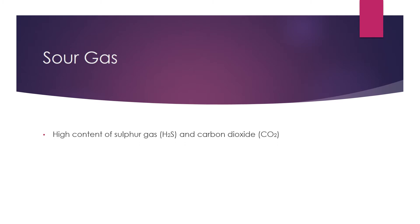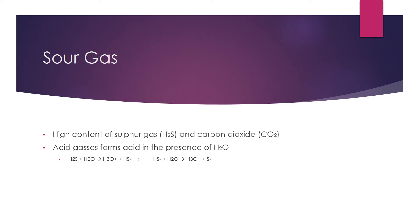Sour gas contains high levels of H2S and CO2. These acid gases form acid in the presence of water. When H2S reacts with water, we obtain H3O ion and HS ion, then HS ion will continue to react with water, which forms H3O ion and sulfur. When carbon dioxide reacts with water, we obtain carbonic acid. Then acid gases contribute impurities to natural gases.